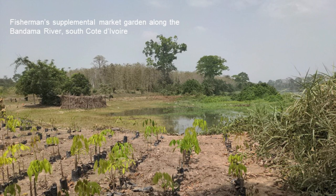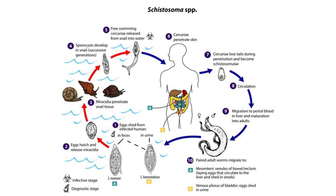Waterborne diseases are generally a big problem in many parts of the world, but what is schistosomiasis and why is it considered a neglected disease of poverty? Schistosomiasis is a disease caused by members of the helminthic parasite genus Schistosoma, of which six species cause this disease in mammals. There are over 200 million people currently infected with schistosomiasis, most of them in Africa.